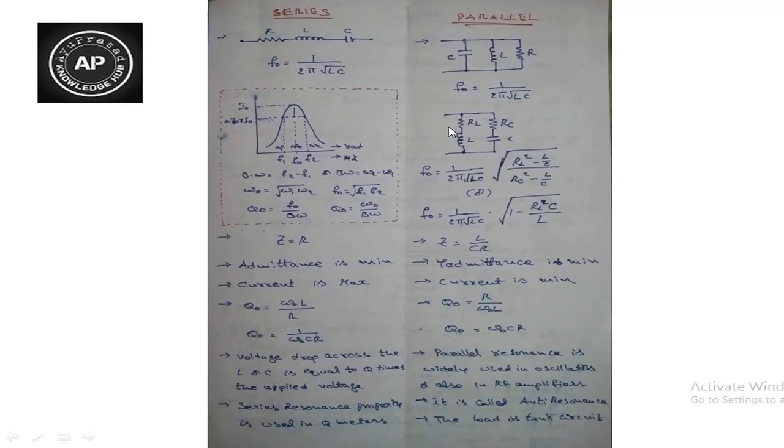Practically, in parallel resonance, only the inductor and capacitor are in parallel. The inductor has resistance R_L and the capacitor has resistance R_C. This is a tank circuit, also called a parallel resonance circuit. In a practical circuit, there is a two-branch network or three-branch network.